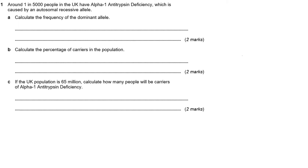So in this particular question, it says one in 5,000 people in the UK have the condition, and it's a recessive allele. So that means that the one in 5,000 people represents the recessive genotype, which is Q squared from our Hardy-Weinberg equations.